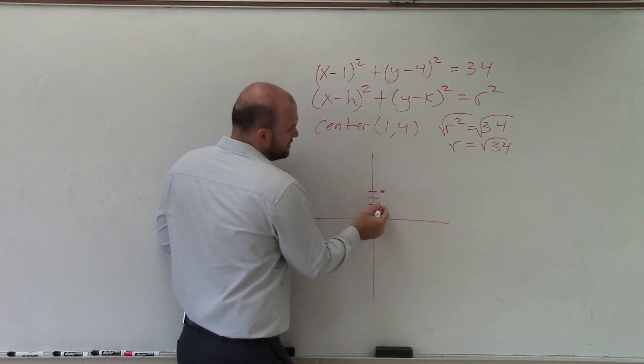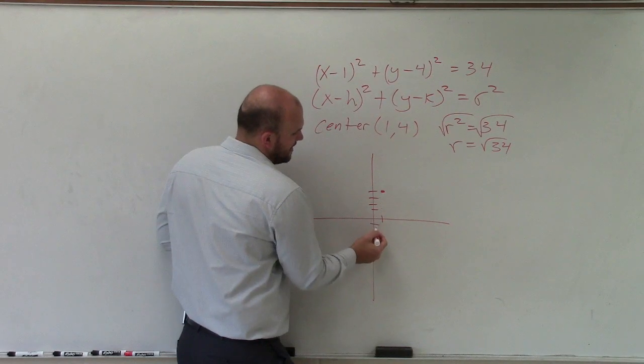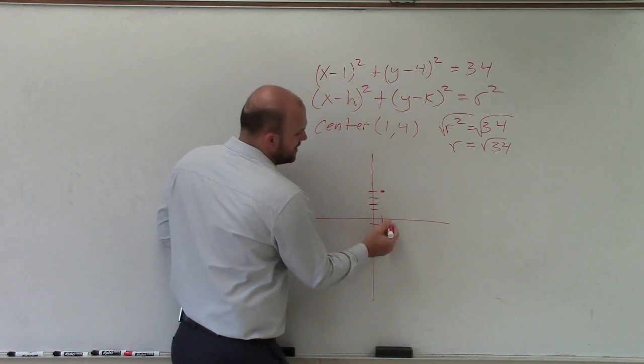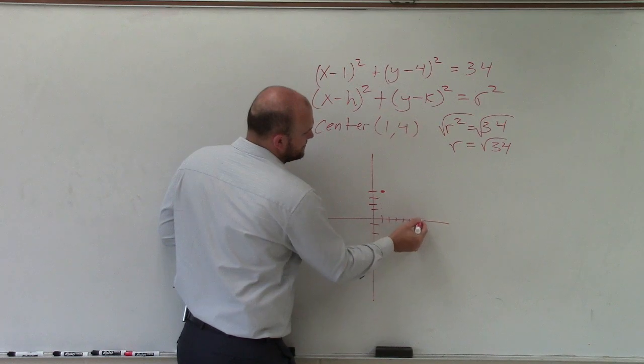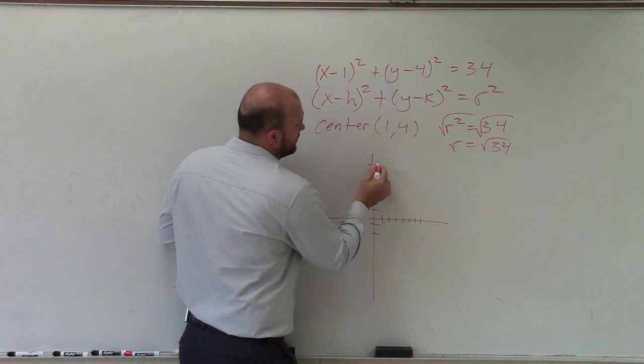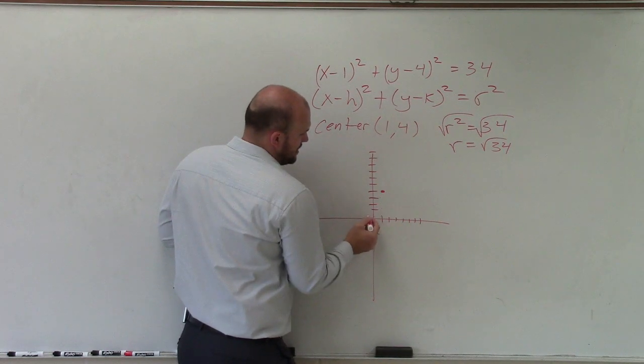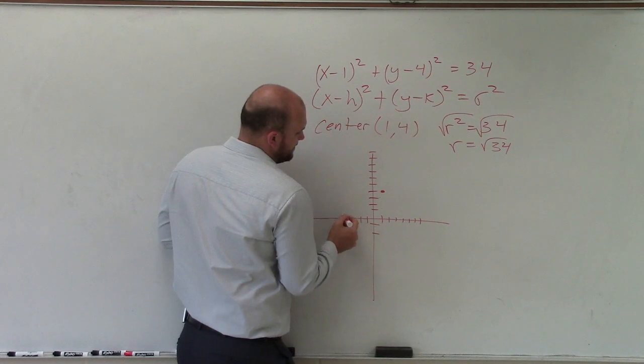So pretty much what I'll do is go 6 units each way. 1, 2, 3, 4, 5, 6 in each direction.